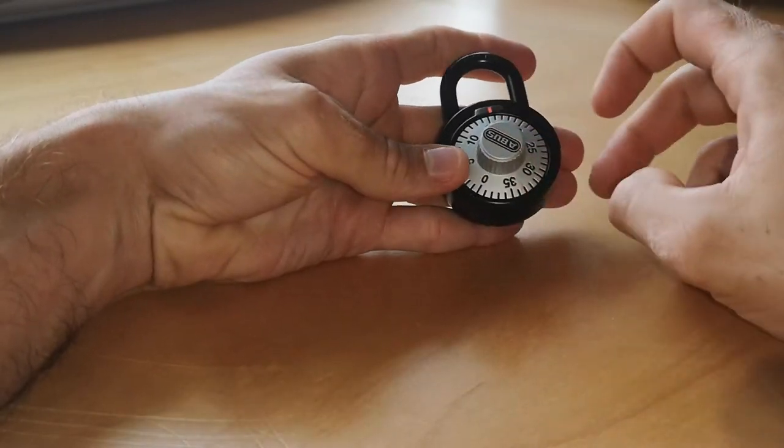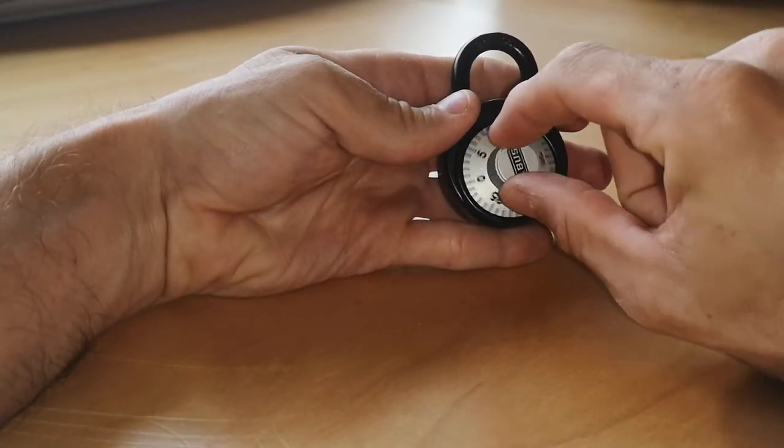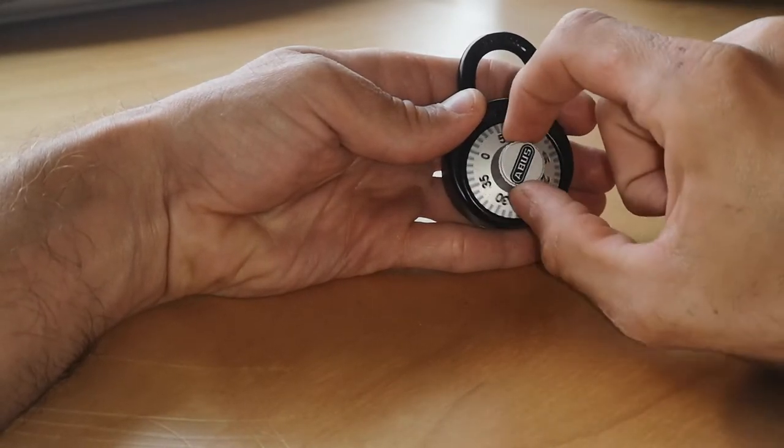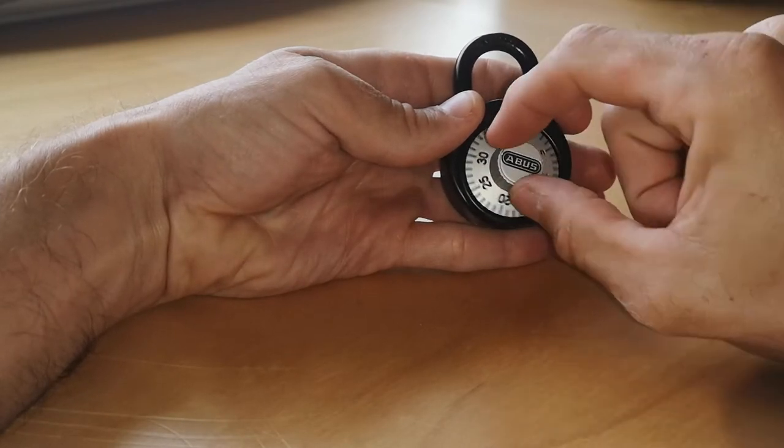So first of all, as with a lot of these types of padlocks, you've got to rotate the dial three times to the right or clockwise.